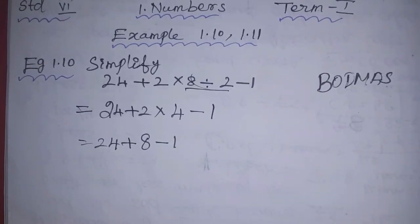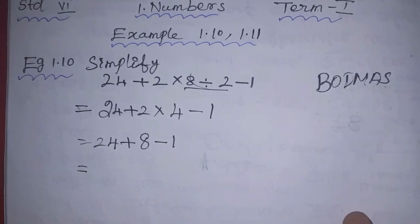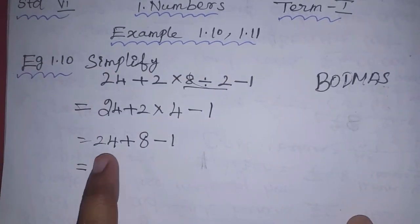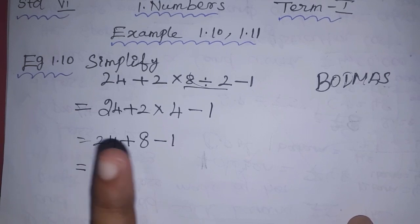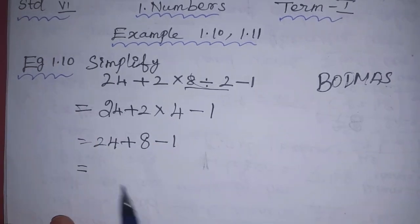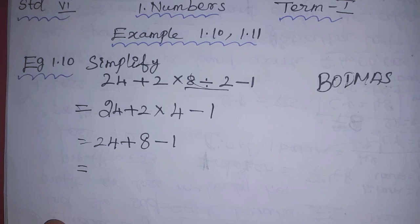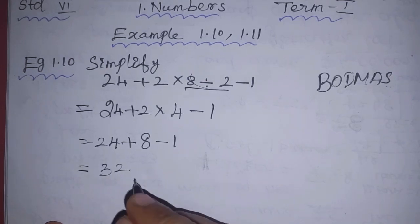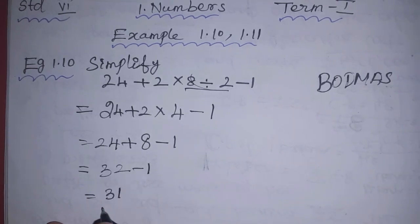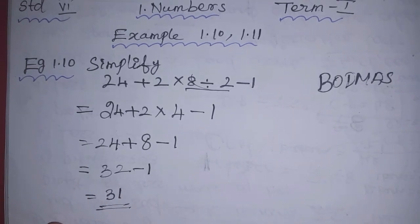Addition and subtraction are side by side, so we go left to right. 24 plus 8 is 32, minus 1. So 32 minus 1 equals 31. That is the answer.